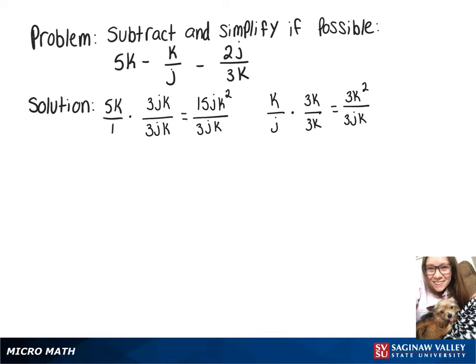And our last fraction there is 2j over 3k and we need to multiply that by j over j. That'll give us 2j squared over 3jk.